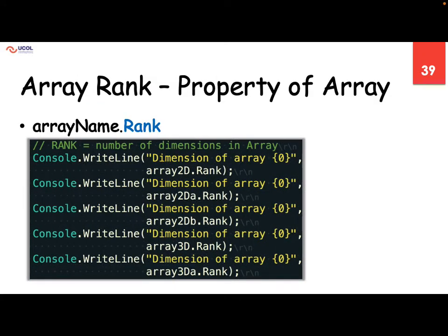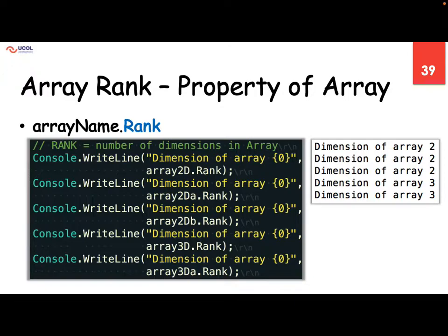Array dot Rank will give me how many dimensions are there. If you are using it on a single-dimension array, that will return one. If you are using it on a two-dimensional array, it will give me two. So for 3D arrays we have three dimensions, for 2D arrays we have two dimensions. Rank gives me the number of dimensions that exist in my array. On a single dimension — like we normally defined in week five — the rank will always give me the value one because only one dimension is there.